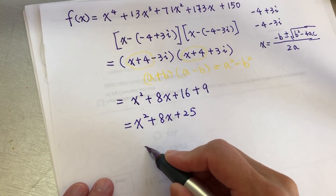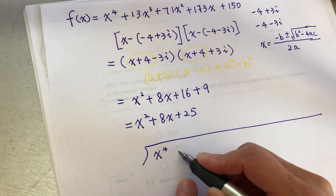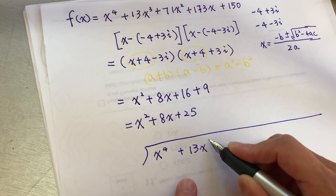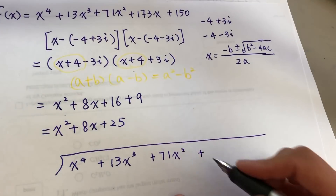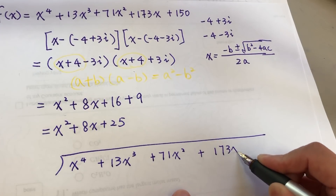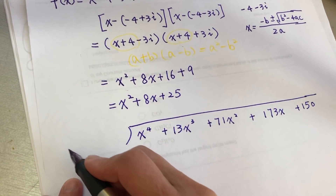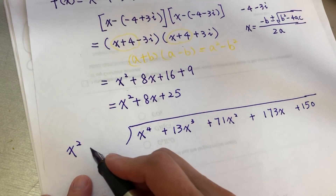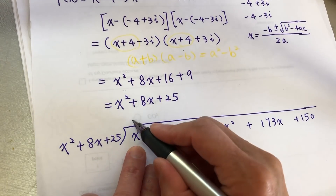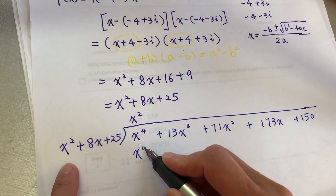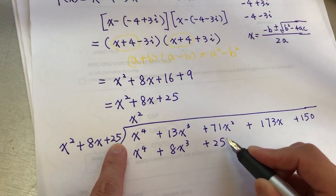One good way to do this is synthetic division, but I didn't learn synthetic division. I'm more comfortable with long division. The end result is the same. So we divide by x squared plus 8x plus 25. Starting the long division: x squared goes into x to the fourth, giving x squared. Then x squared times (x squared plus 8x plus 25) gives x to the fourth plus 8x cubed plus 25x squared.